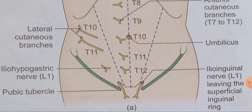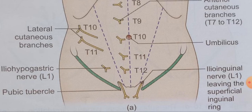The terminal part of the ilioinguinal nerve emerges through the superficial inguinal ring. It pierces the external spermatic fascia and descends to supply the skin of the external genitalia and the upper part of the medial side of the thigh.